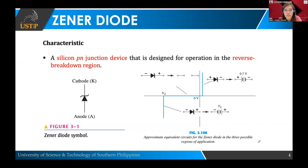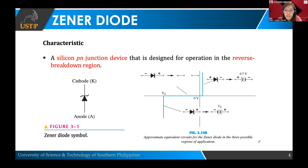Our discussion for today is about Zener diode. It's a special type of diode that can be operated in the reverse breakdown region. It is a silicon PN junction device designed for operation in the reverse breakdown region. From our previous discussion on ideal diodes and silicon diodes, the standard diodes we discussed — during forward bias condition, our diode conducts. But when it is in reverse bias condition, our diode is in its off state, meaning it will not conduct and there is no current flowing throughout the whole circuit.